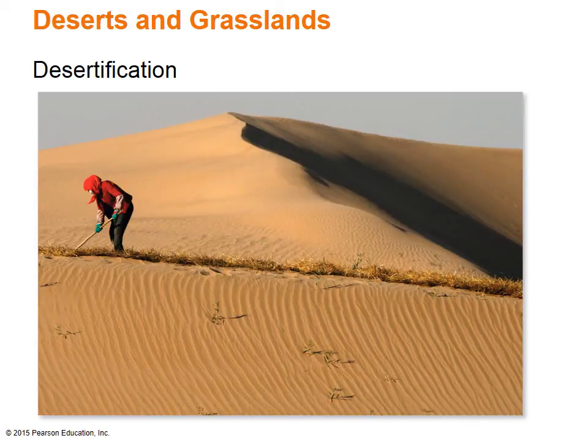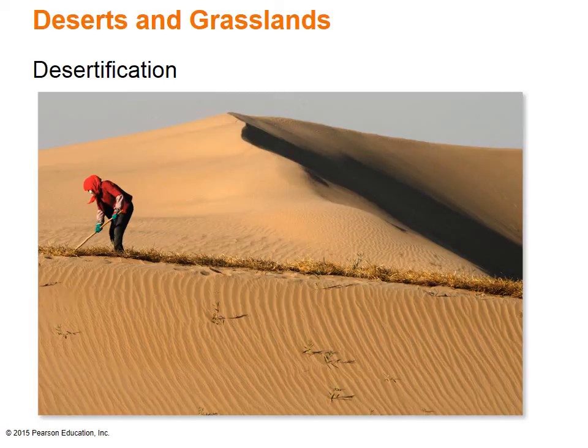Desertification, which is the creation of arid deserts from what was once grasslands, is also another environmental challenge occurring in the world's desert regions. Desertification normally occurs when extensive farming is done in semi-arid grassland areas. In this photo, a worker builds biological barriers using hay to stabilize sand dunes and prevent desertification in the Tengar Desert, Gansu Province, China. Located in the arid northwest, the area is surrounded by the encroaching Tengar and Badain Jaran deserts and is one of the major sources of China's sandstorms. The Chinese government has spent billions of dollars trying to prevent further expansion of the desert by introducing vegetation and planting trees.